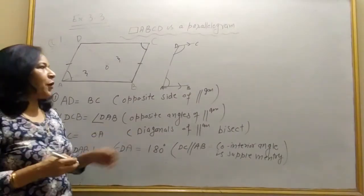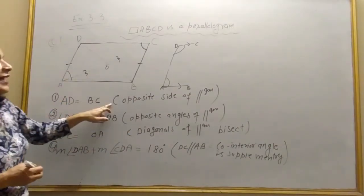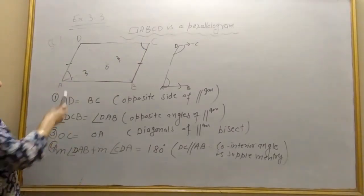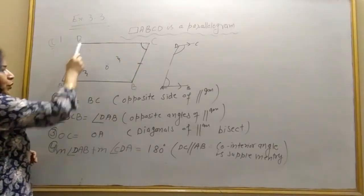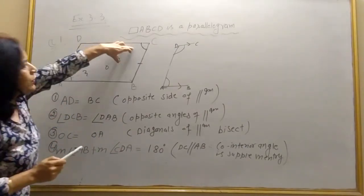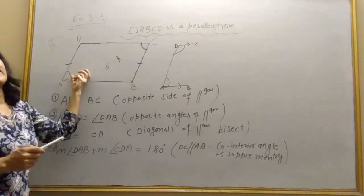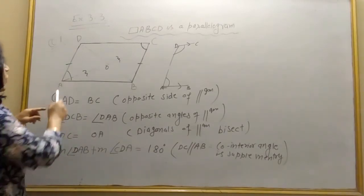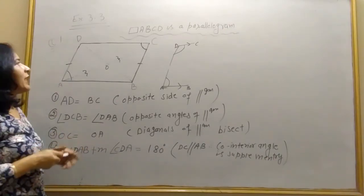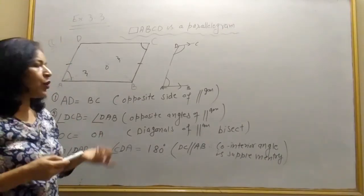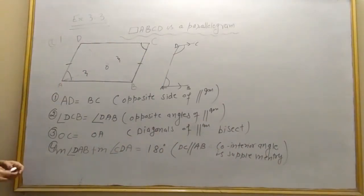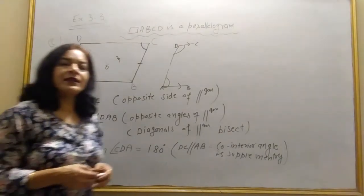So in this way, you use the properties: first, opposite sides are equal, that's why AD is equal to BC; second, opposite angles are equal, so angle BCD equals angle DAB; third, diagonals bisect each other, so OC equals OA; and fourth, the measurement of these two angles sum to 180 degrees because adjacent or co-interior angles of a parallelogram are supplementary.